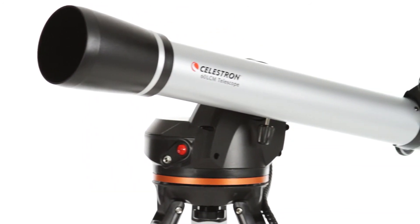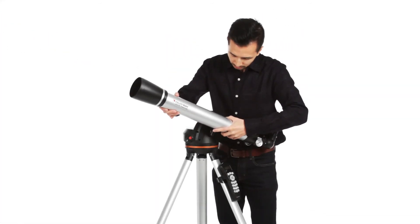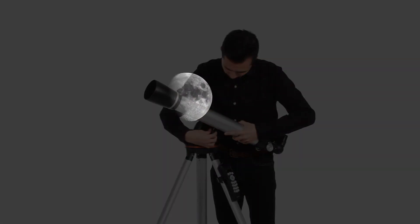The 60 LCM is the most compact telescope in the LCM family. Its 60mm refractor optical design is lightweight and easy to transport. Use it to catch great views of the moon, rings of Saturn, moons of Jupiter, and even some of the brightest deep sky objects.